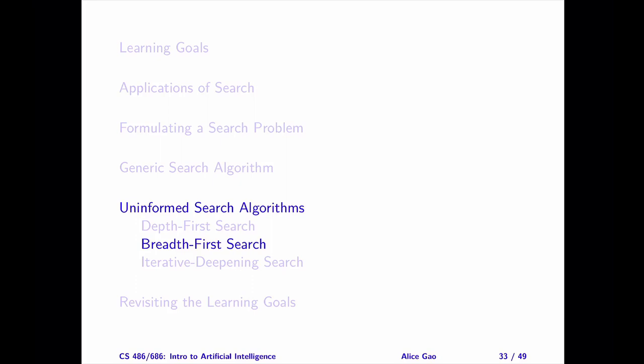That's everything on the breadth-first search algorithm. Let me summarize. After watching this video, you should be able to do the following: explain BFS at a high level, trace BFS on a search graph, describe properties of BFS, including space complexity, time complexity, completeness, and optimality.